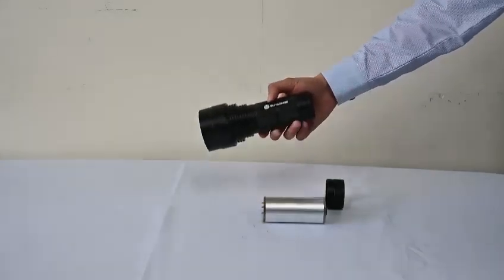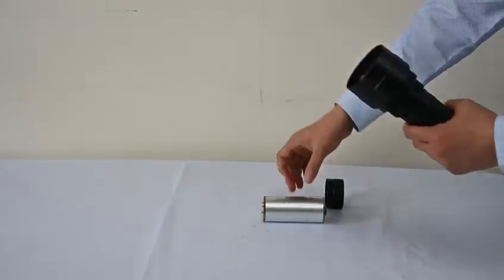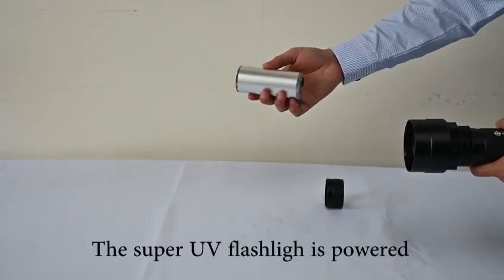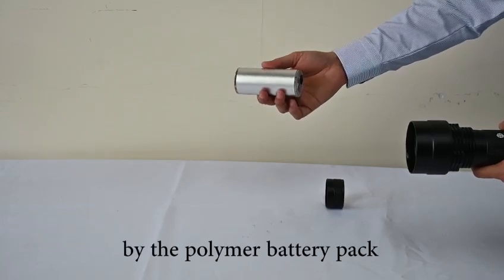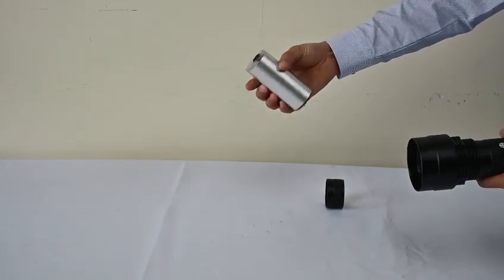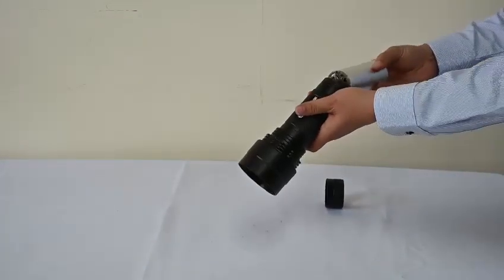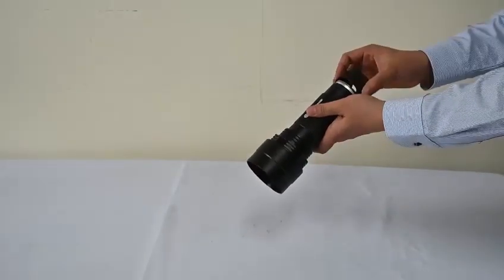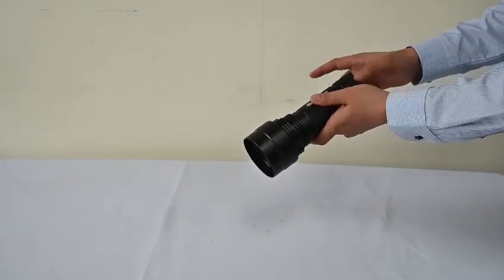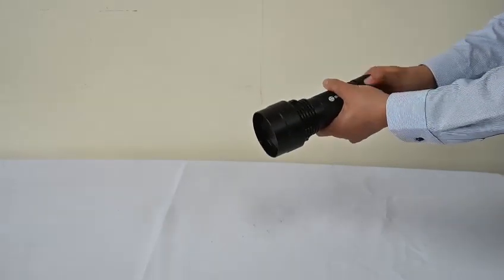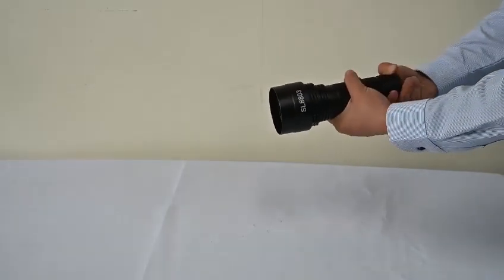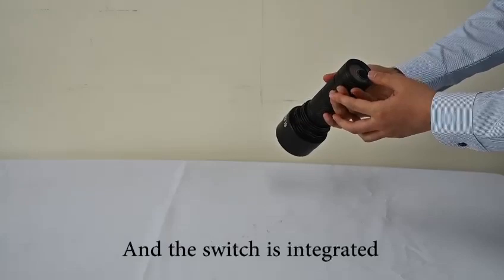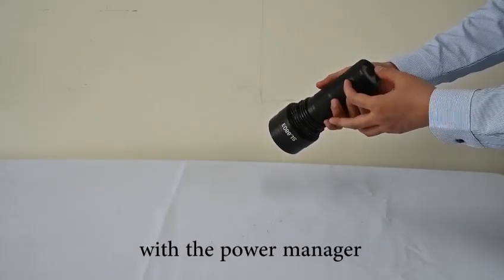First, we will see the structure. The Super UV flashlight is powered by a polymer battery pack, and the switch is integrated with the power manager.